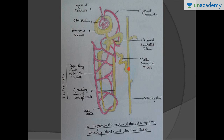Many distal convoluted tubules continue into a single collecting duct, and many collecting ducts continue into the duct of Bellini. Also visible in this diagram is a straight vessel called the vasa recta, which is very important in the concentration of urine and maintaining an osmotic gradient from cortex towards the medulla. The cortex contains the Malpighian corpuscle, PCT, and DCT, while part of the loop of Henle and the collecting ducts are present inside the medulla.